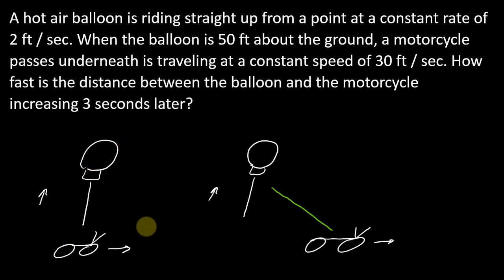Thinking about this situation here, we know that at this moment in time the balloon was 50 feet above the ground and the motorcycle was right here. We'll say that this is the zero starting point.